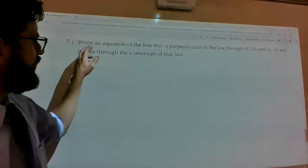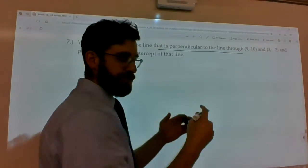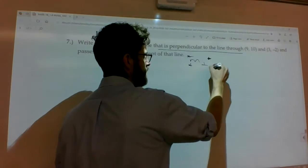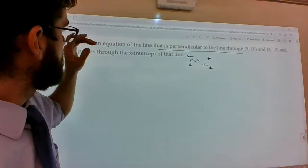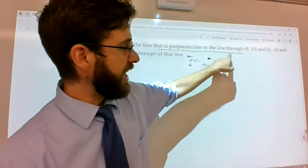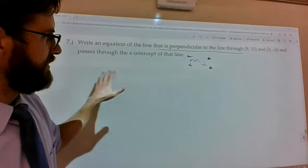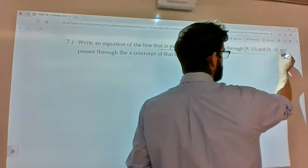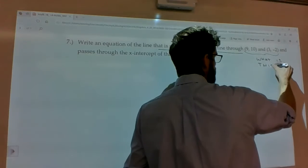Last one states, write an equation of a line that's perpendicular. So, we're instantly concerned with perpendicular slope. It goes through 9, 10, and 3, negative 2. It's write an equation of the line that's perpendicular to the line that goes through. Okay. So, there's a lot going on here. Here's what we got to do. We first have to figure out, what is this original line?